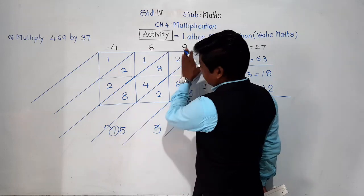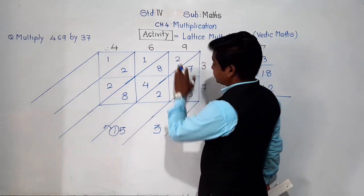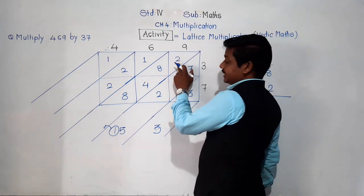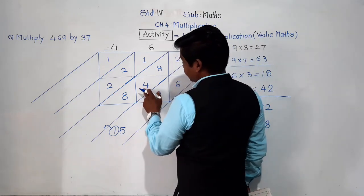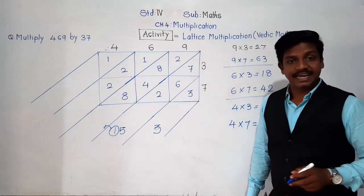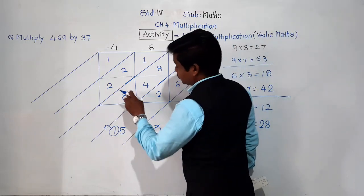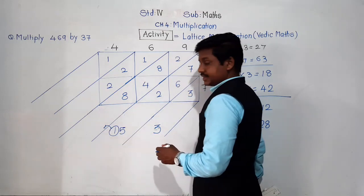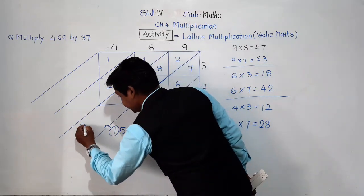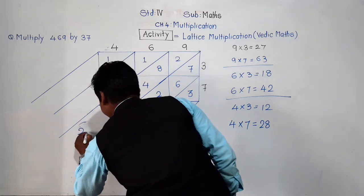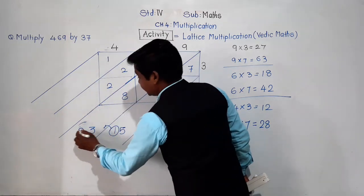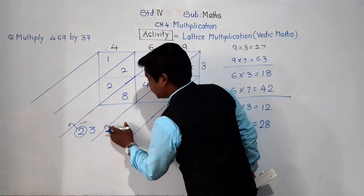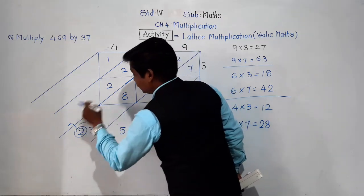Now add the third strip from the right: 8 + 2 = 10, plus 4 = 14, plus 8 = 22, plus carry 1 = 23. We write 23 here: 3 comes down and 2 is carried to the next strip.